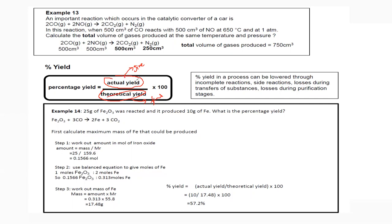For example, if we have 25 grams of iron(III) oxide that reacted and produced 10 grams of iron, and the equation is given. Iron is the product here, so practically, from 25 grams of iron oxide we are getting 10 grams of iron — that's the practical or actual value.